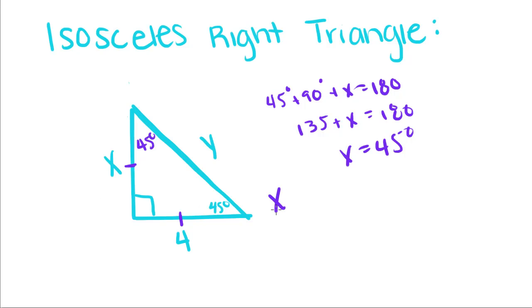So that means side X is equal to 4, and we're trying to find what Y is, and Y is the hypotenuse. So we follow our rule and take 4 and multiply it by the square root of 2 to get the length of Y. So Y equals 4 square roots of 2.